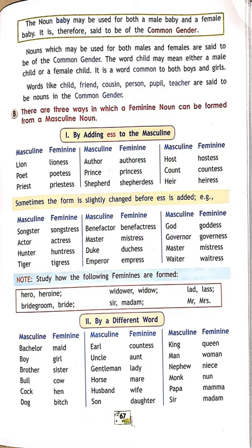If you read the spellings once or twice you can remember them. In exams I may ask any word from this page, so you should remember them. Empress, god becomes goddess, governor becomes governess, master becomes mistress, waiter becomes waitress.